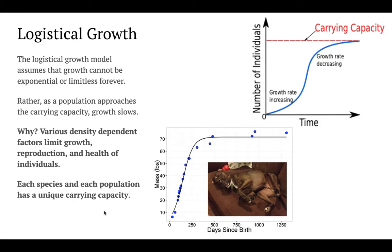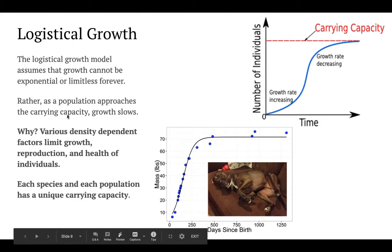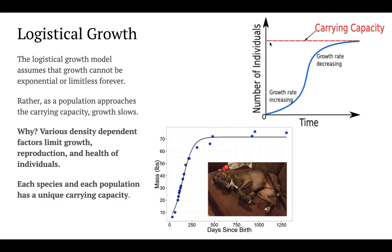To understand limits to growth, we need to examine logistic growth. The logistic growth model assumes that growth cannot be exponential or limitless forever — there will always be factors that limit growth, called carrying capacity. Carrying capacity says that for any population, there's a certain number of individuals that can be supported within that environment. These are generally density-dependent factors that create the carrying capacity and limit growth as populations approach it — things like food, reproduction rates, or health of individuals. Each species and population has a very unique carrying capacity; Vermont's moose will be different than Alaska's moose based on size, resources, climate, and more.